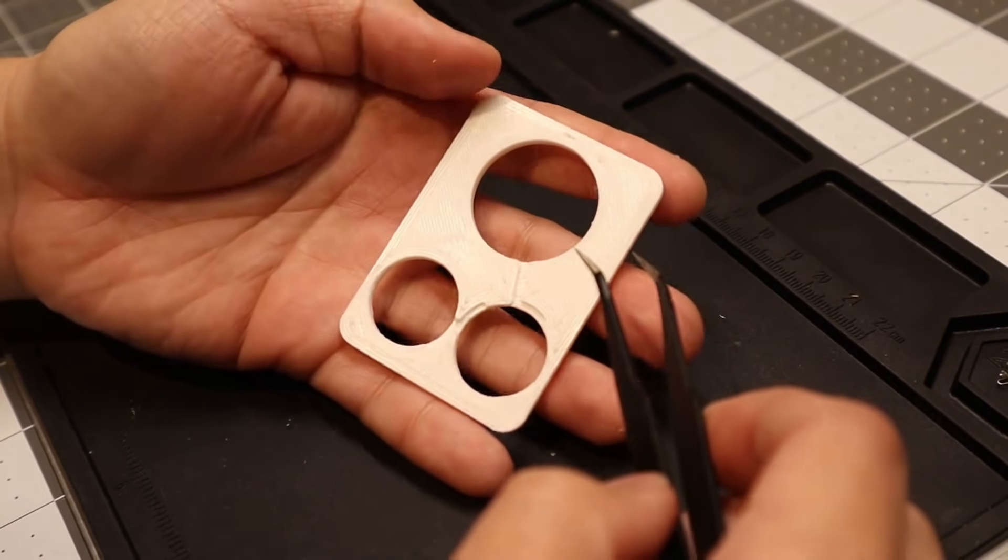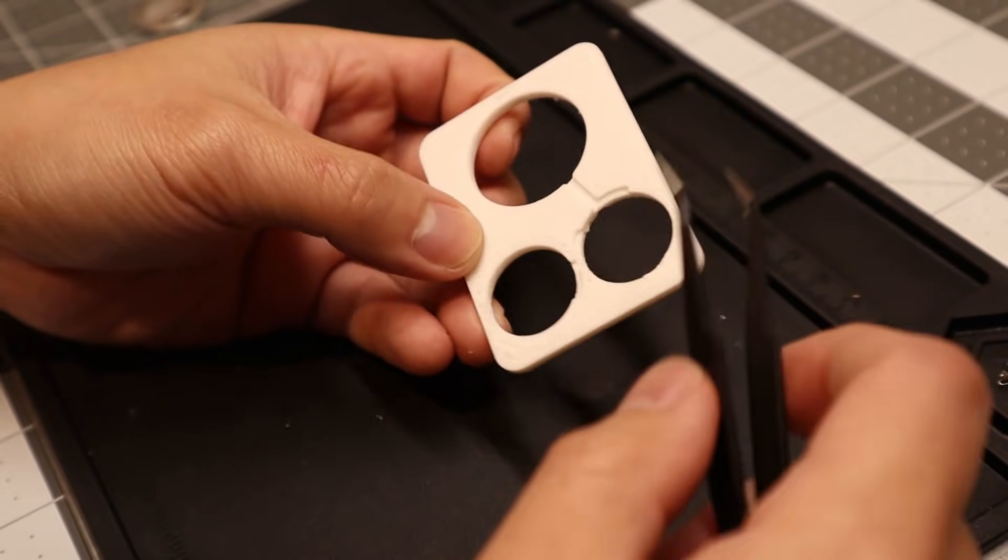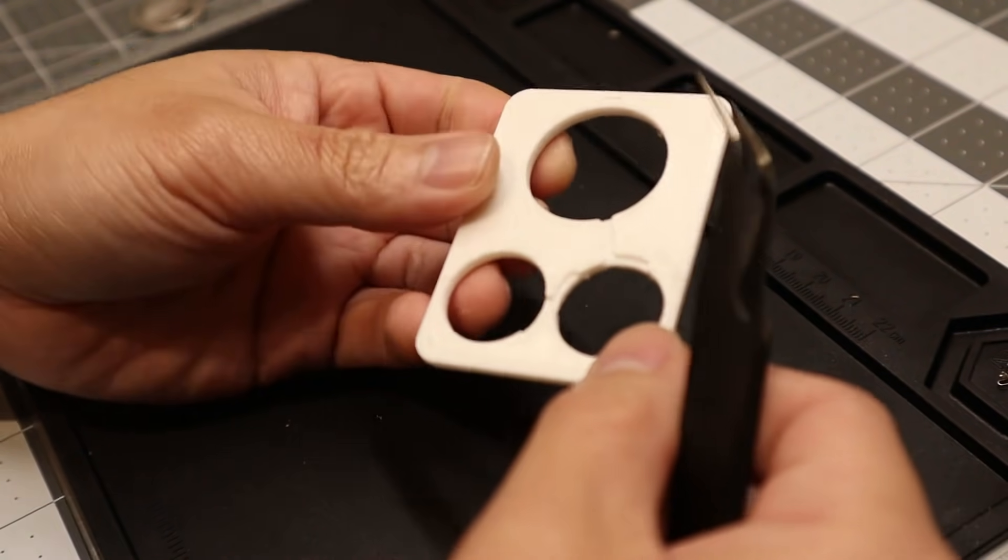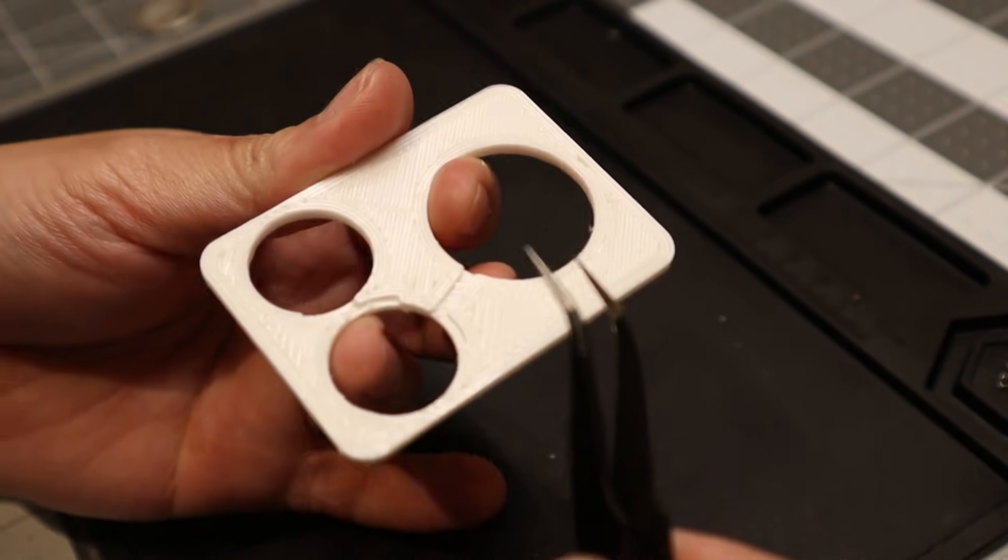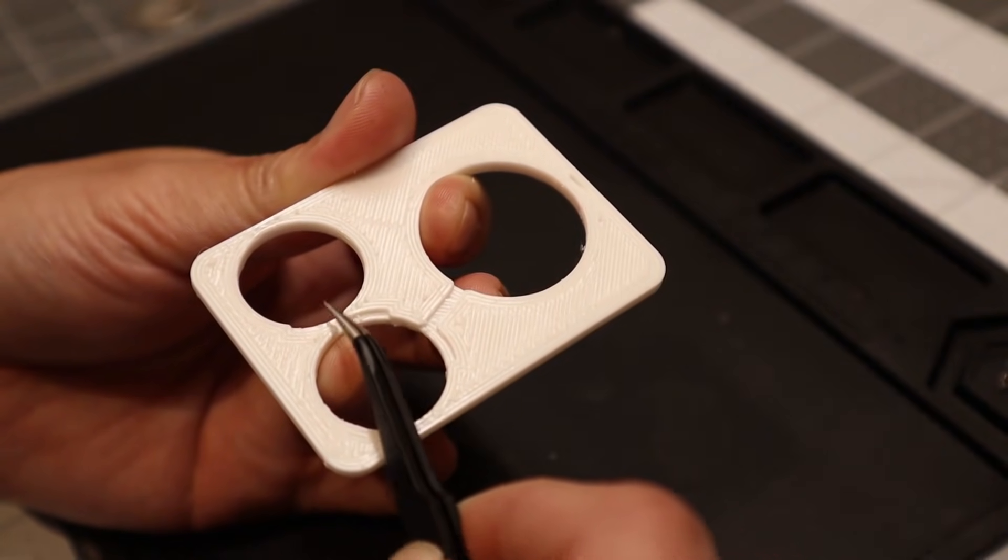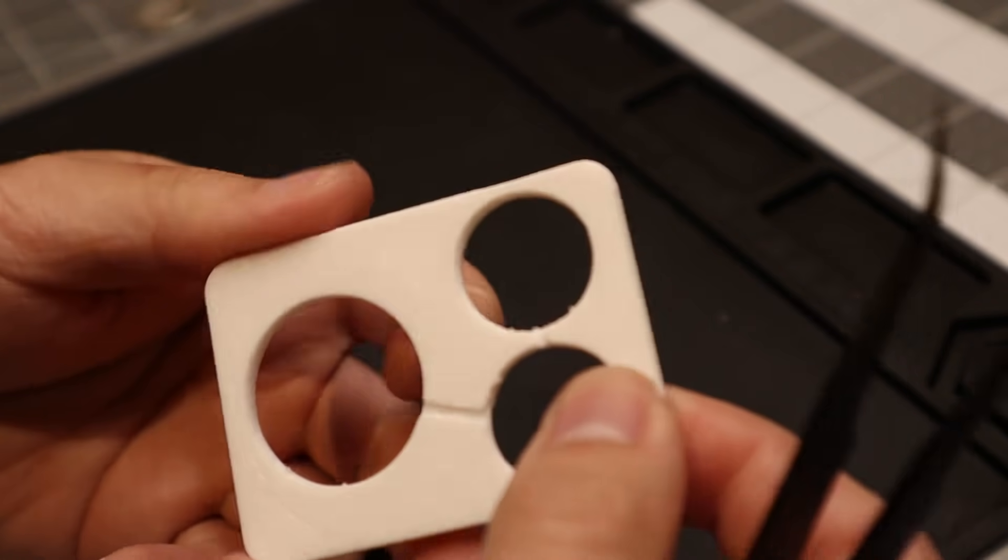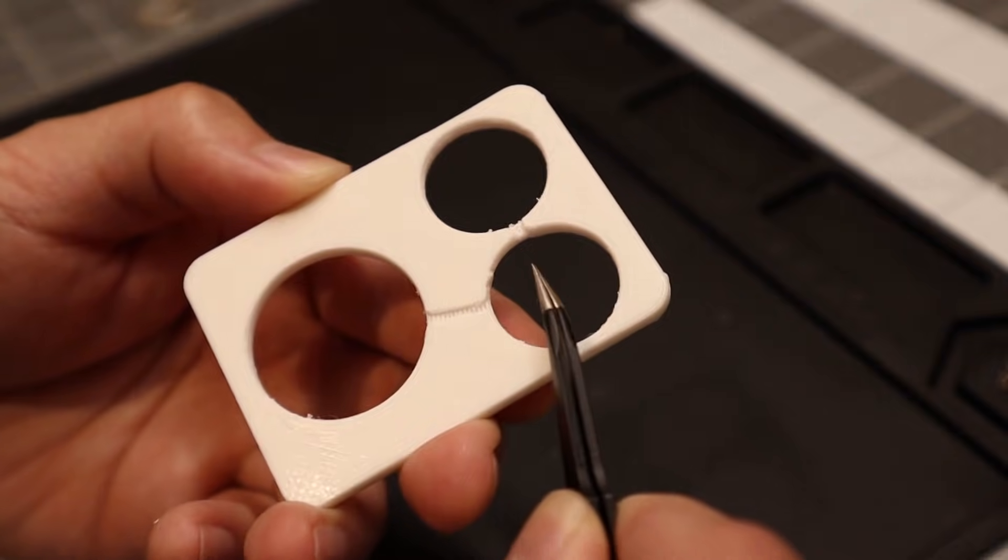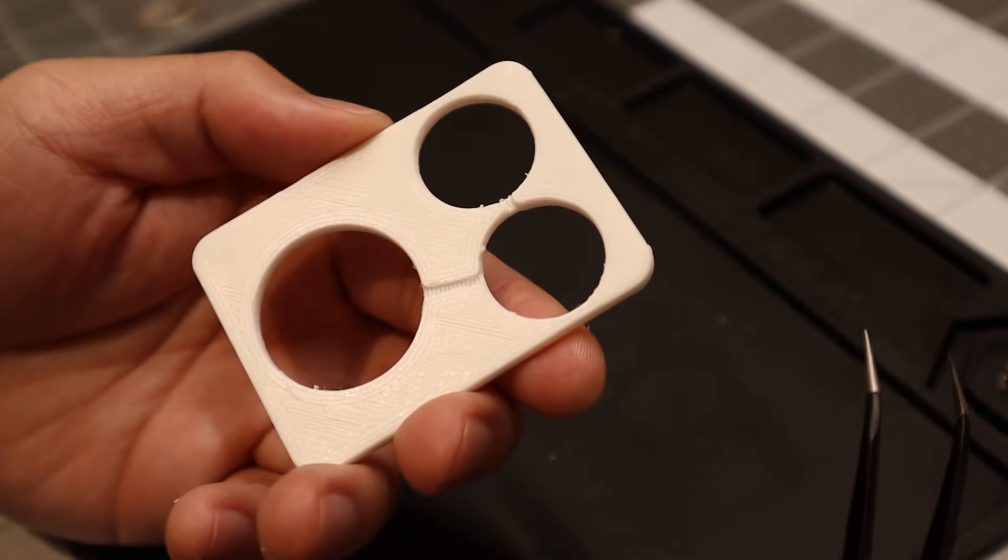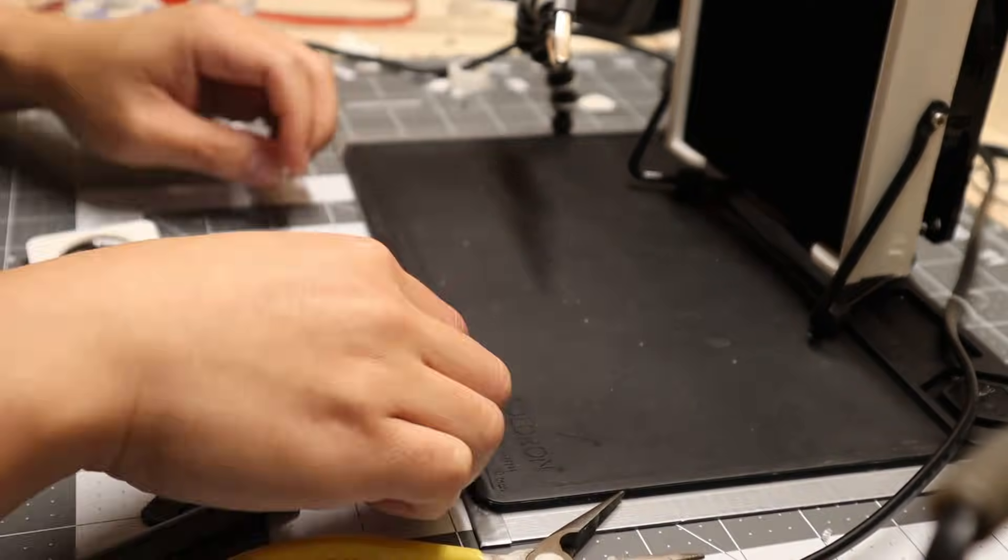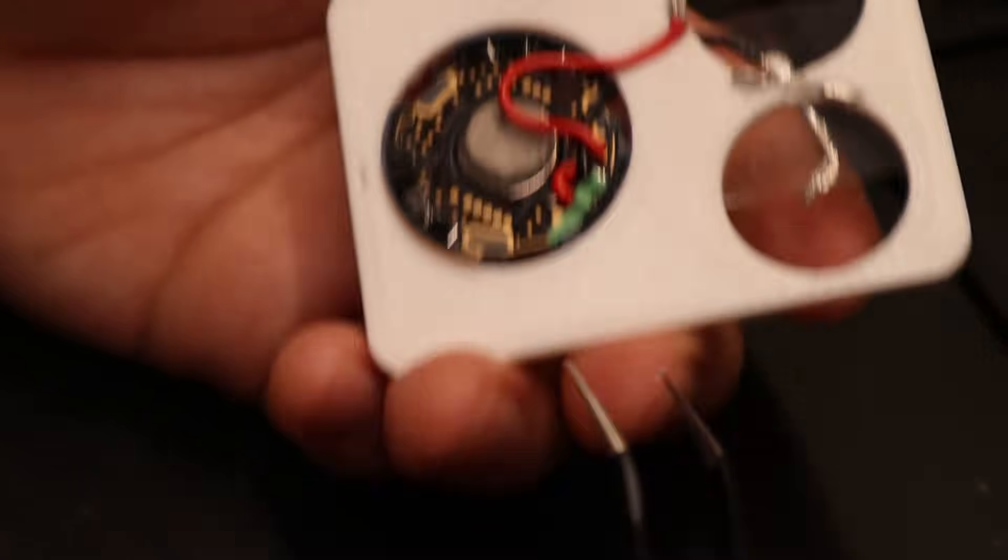So here it is. I 3D printed a new case for it. And this time, as you can see, there are two slots for the battery. I've also added these grooves so that the top will route the positive to the other battery cell. And the bottom has grooves where I route the ground wire. So let me get this hooked up.